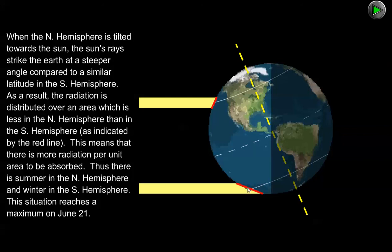Meanwhile, in the southern hemisphere, it's tilted away from the sun and the sunlight is coming in at a lower angle and spreading out over a larger area, so the heating power of the sun is reduced in the southern hemisphere. That's why the southern hemisphere is having its winter while the northern hemisphere has its summer.